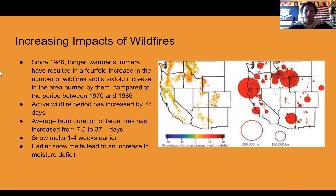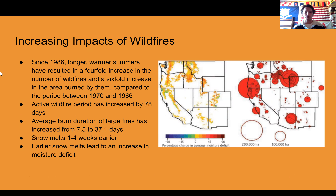I wanted to talk about the increasing impacts of wildfires due to climate change. Since 1986, the longer, warmer summers due to increasing temperatures have resulted in a fourfold increase in the number of wildfires and a sixfold increase in the area burned. The active wildfire season has increased by 78 days per year, and the average burn duration of a singular large fire has increased from seven and a half days to about 37 days.